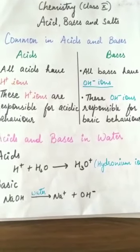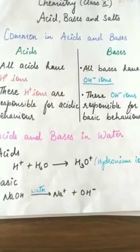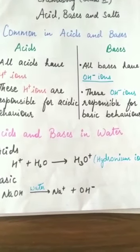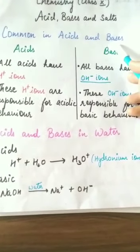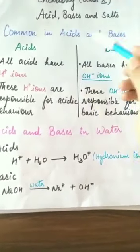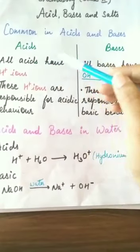Let us start with the chapter acids, bases, and salts. Today I'm going to teach you what are all common in acids and bases. The common characteristics of acids and bases are: for acids, all acids have H+ ions, that is hydrogen plus ions.